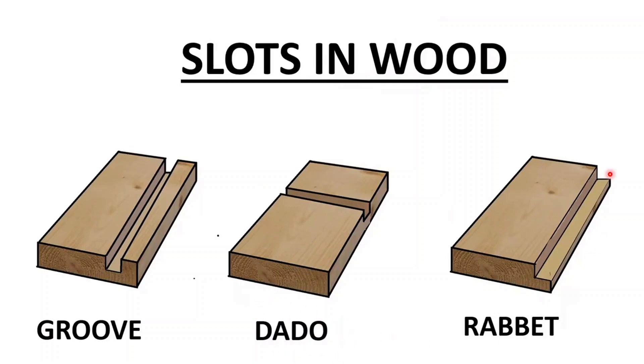And if a slot is on an edge like this or also on an end like this, it's called a rabbet. In this video, we're going to talk about making grooves on the router table.